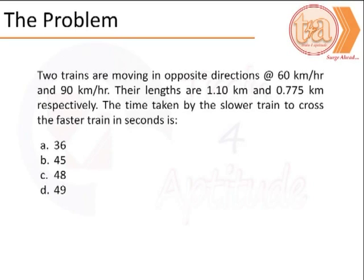Two trains are moving in opposite directions at 60 km per hour and 90 km per hour. Their lengths are 1.1 km and 0.775 km respectively.